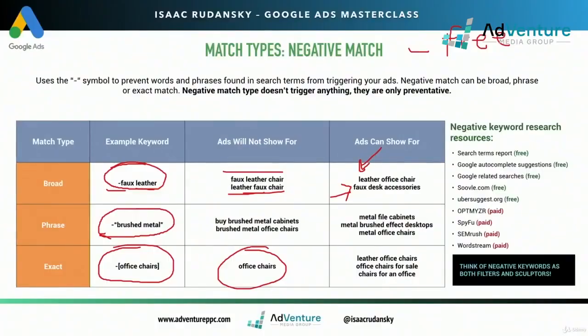You also need to understand research tools for negative keywords. You can use the search terms report (free), Google autocomplete suggestions (free), Google related searches (free), Soovle.com (free — great for positive and negative keyword suggestions), and Ubersuggest.org (free). There are also paid options: Optimizer, SpyFu, SEMrush, and WordStream's agency management software. However, you can run highly professional campaigns using only the free research tools, as long as you spend the appropriate time finding good negative keyword ideas and adding them to the right place with the right match type.